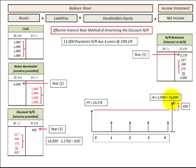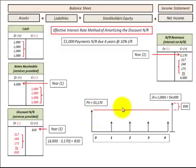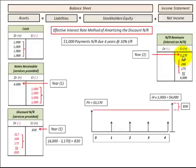What we're looking at here is notes receivable where we have four payments at the end of each of the next four years, and then we discount those payments back at a known interest rate to a present value. Once we know the present value and the payments we're going to receive on the notes receivable, we'll determine our interest earned for each of those four years and record it in our revenue account.